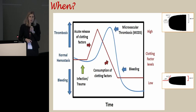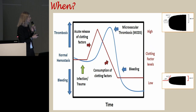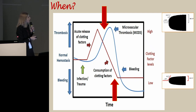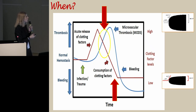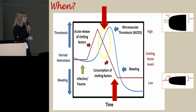If we perform ROTEM or TEG in a septic patient, we can obtain two results: hypercoagulability if the test is done very early after initial coagulation activation in the stage of microvascular thrombosis, or hypocoagulability if we wait until consumption of clotting factors has already occurred. Our therapeutic window is after the initiation of coagulation activation and immunothrombosis have taken place, but before the decrease in clot firmness and clotting factors — because if we wait too long and give treatment then, the patient will be bleeding.